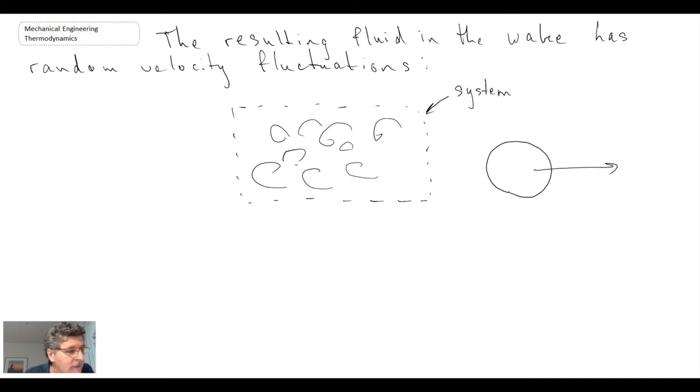Given that we have random velocity fluctuations, if we were to put a hot wire probe or laser Doppler velocimetry or particle image velocimetry systems for measuring velocity, we would learn that the velocity here is changing as a function of position, three dimensions, as well as time.